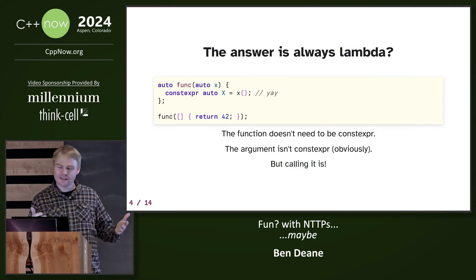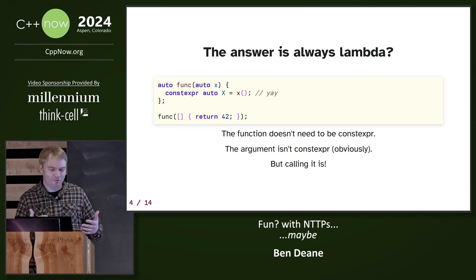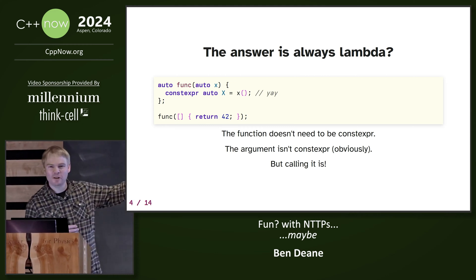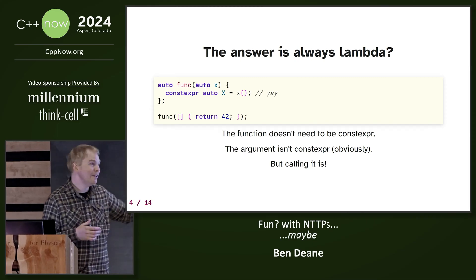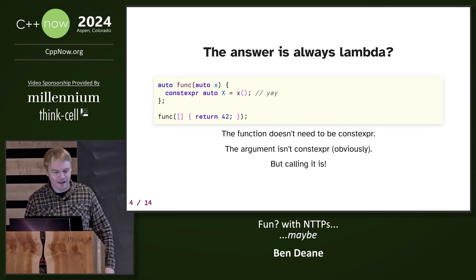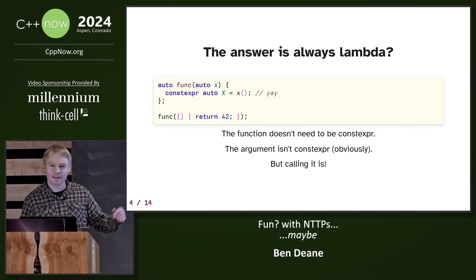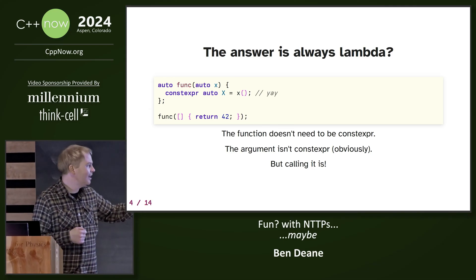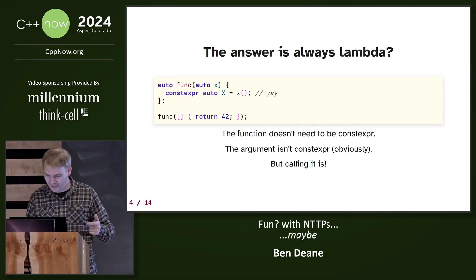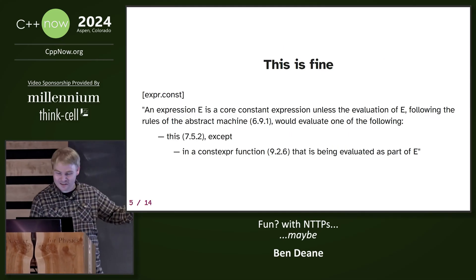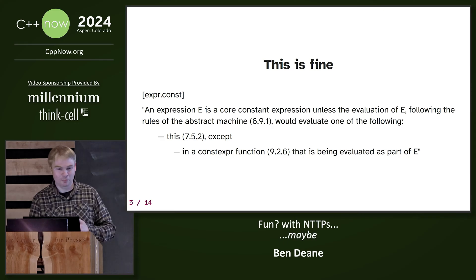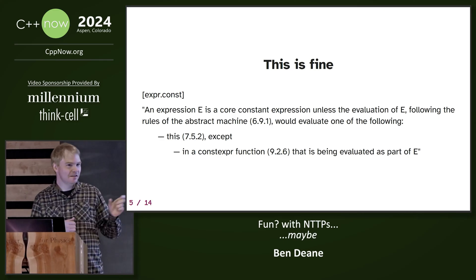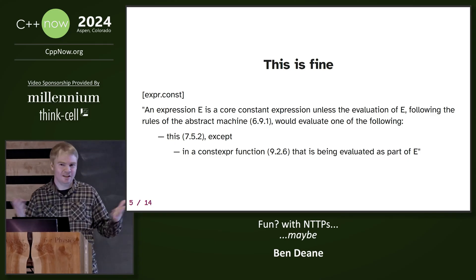Well, the answer is always lambda, right? If we wrap the thing inside a lambda — here, imagine 42 is your NTTP — you can pass it to a function, and then you can get the thing out of it and call it constexpr. And this is fine, because the standard says it is. You're allowed to evaluate constexpr functions, and this argument, the standard says, that's okay.